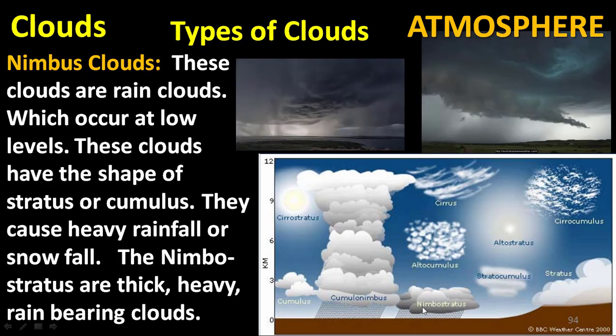Nimbus clouds are rain clouds which occur at low levels. They have the shape of stratus or cumulus and cause heavy rainfall or snowfall. Nimbostratus clouds are thick, heavy, rain-bearing clouds. That is the information about the types of clouds.